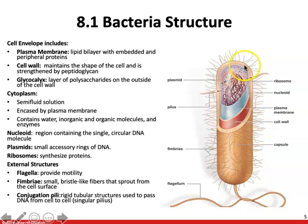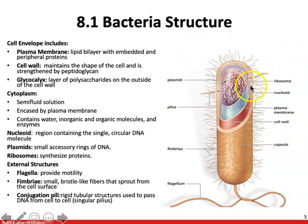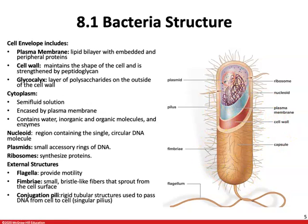Reviewing basic bacterial structure: the cell envelope is the outermost layer and includes the plasma membrane — a lipid bilayer with embedded and peripheral proteins — and the cell wall made of peptidoglycan, which maintains cell shape and provides protection. The outermost layer is a polysaccharide capsule. Inside is the cytoplasm, a semi-fluid solution containing water, organic molecules, and enzymes, and embedded with ribosomes, which are the site of protein synthesis.